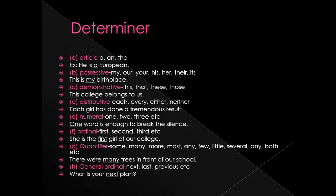So these eight subtypes — article, possessive, demonstrative, distributive, numeral, ordinal, quantifier, and general ordinal — together are called determiner. In exam questions, you may be asked to 'put a determiner,' 'pre-modify the word with a possessive,' 'pre-modify the word with a demonstrative,' or 'pre-modify the noun with a determiner.' Just remember these eight types and you'll know what to use.